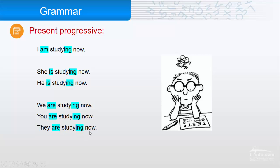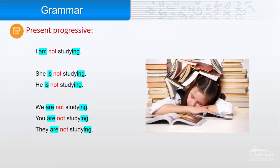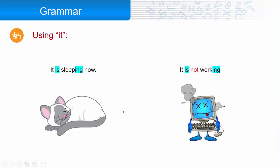They are studying now. So the verb 'study,' we add am, is, are, and -ing. The negative is: I am not studying, she is not studying, he is not studying, we are not studying, you are not studying, they are not studying.